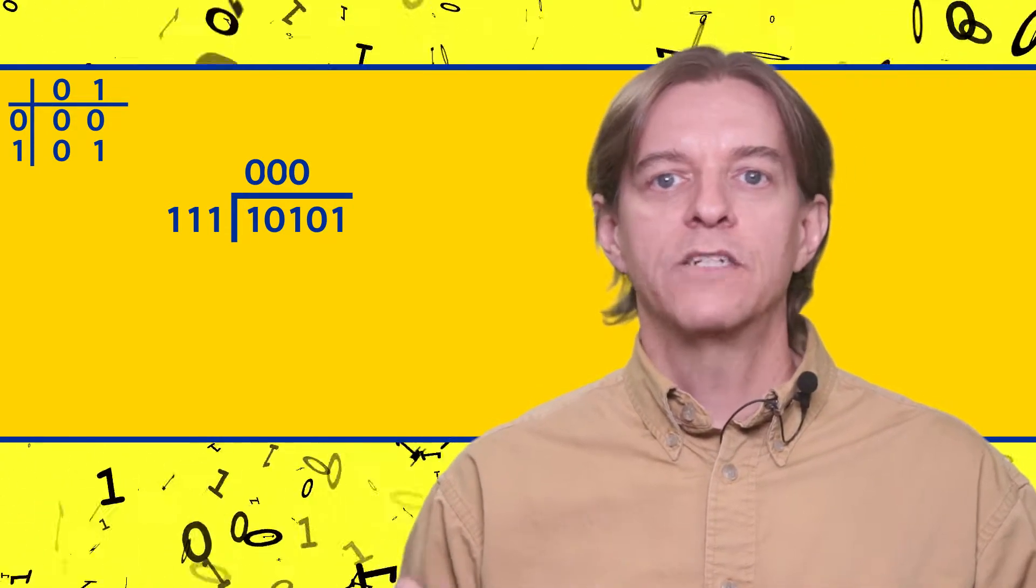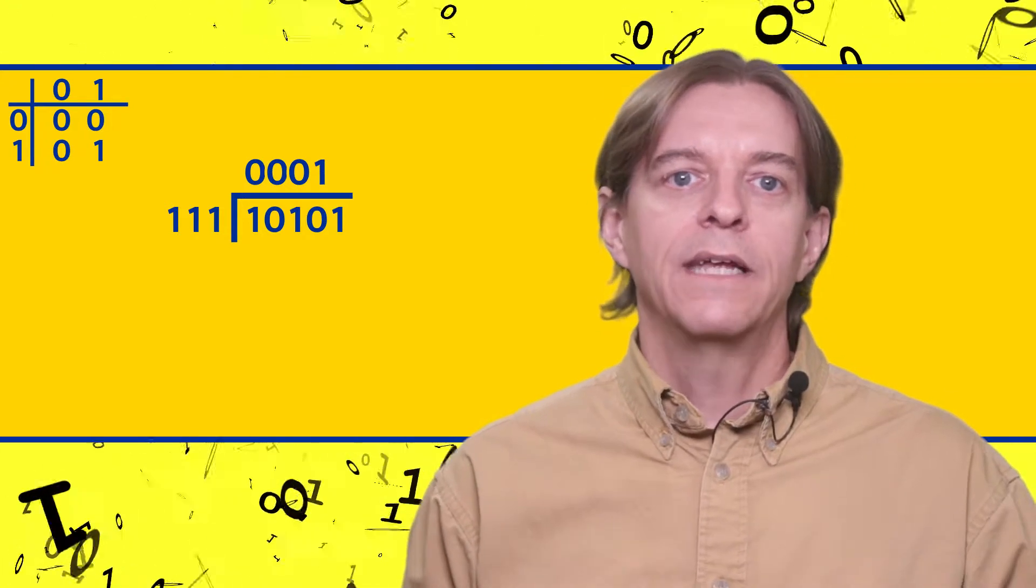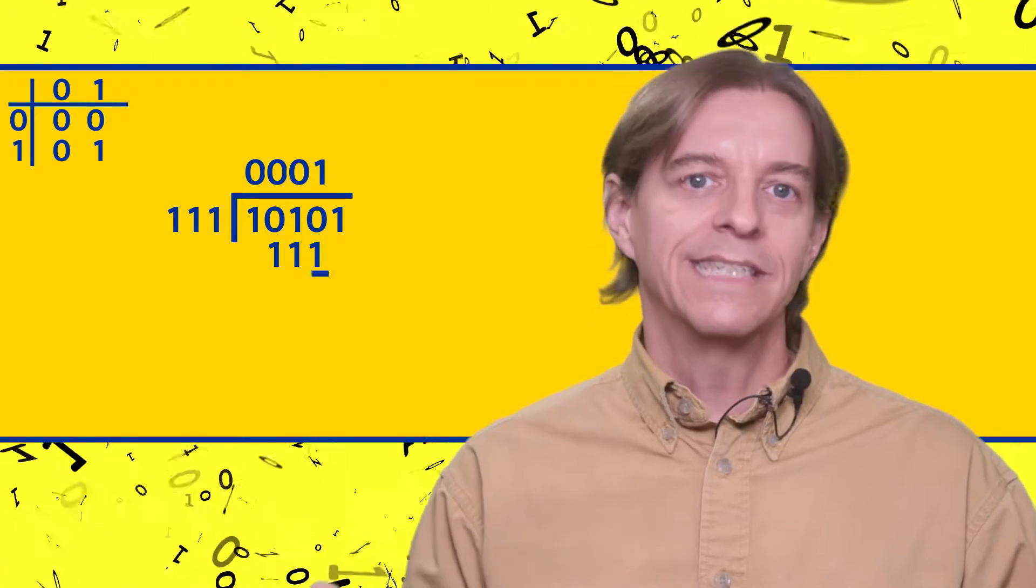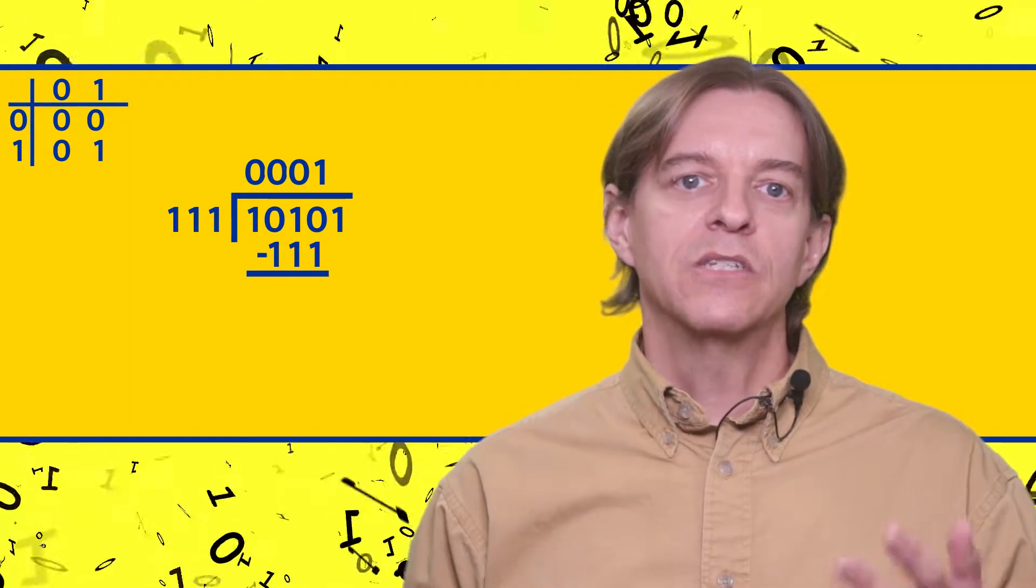Finally, 111 is less than 1010, so we write down a one in the quotient, put the 111 under the 1010, and subtract. The subtraction result is 11.